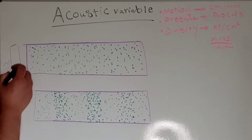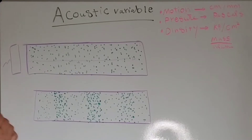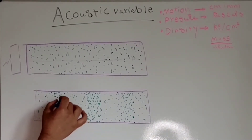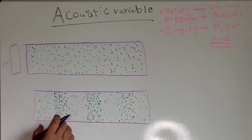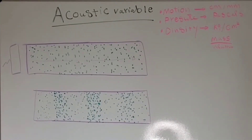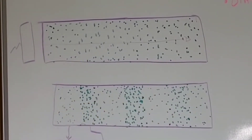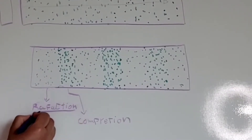When sound waves travel in a medium, the medium contains particles. These particles act on the medium in a way that results in areas having more density, more pressure, and more motion, and other areas having less pressure, less motion, and less density. The motion, pressure, and density are called the acoustic variables, and these variables travel through the medium as a wave. An area with low acoustic variable values is called rarefaction.